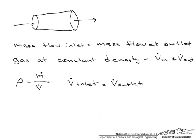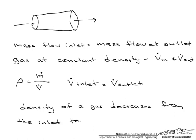Now let's look at a situation where it is not constant density. So let's say that the density of a gas decreases from the inlet to the outlet. In other words, the density going in is greater than the density coming out.